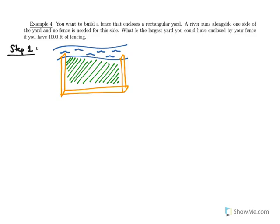We're trying to find the largest yard possible with a thousand feet of fencing. Our two variables are L (the length of the fence) and W (the width of the fence). Let's think about some possible fences: a width of 100 gives a length of 800; a width of 300 gives a length of 400; a width of 400 gives a length of 200; and a very narrow width of 1 gives a length of 998 — a very impractical yard.